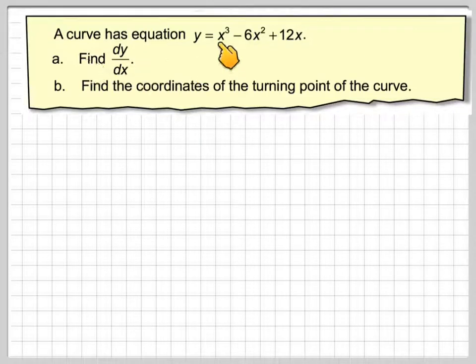A curve has equation y is equal to x cubed minus 6x squared plus 12x. Find dy by dx and find the coordinates of the turning point of the curve.